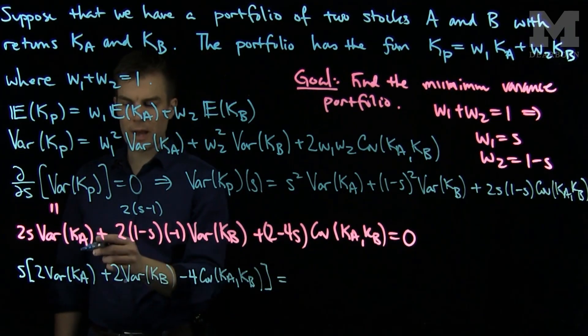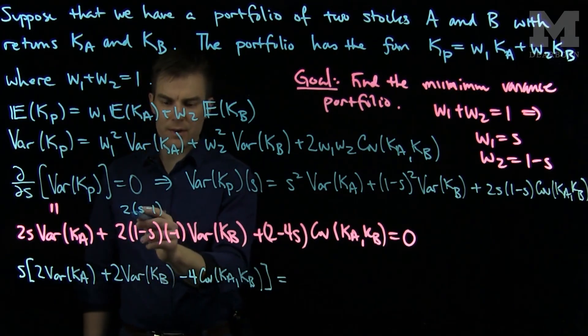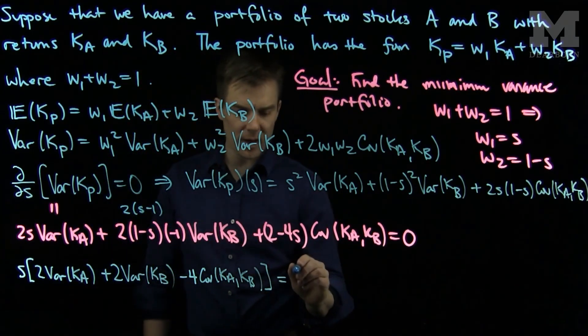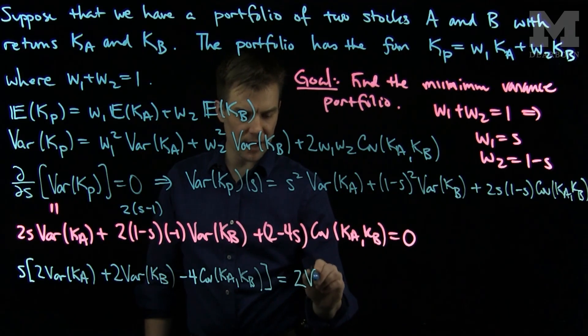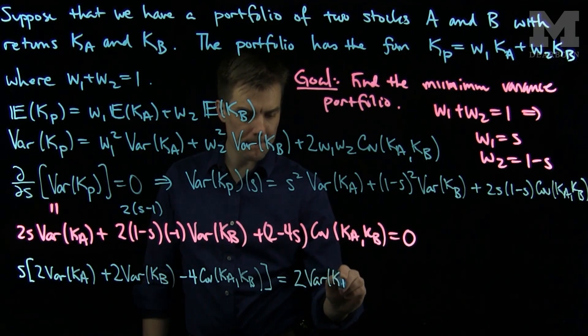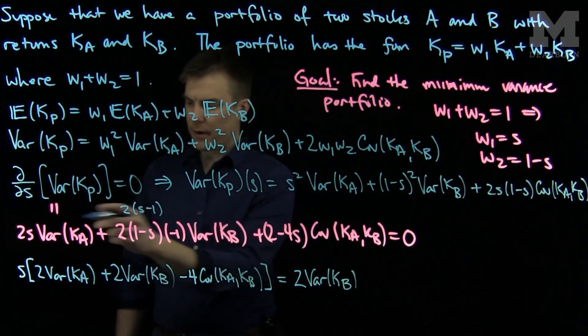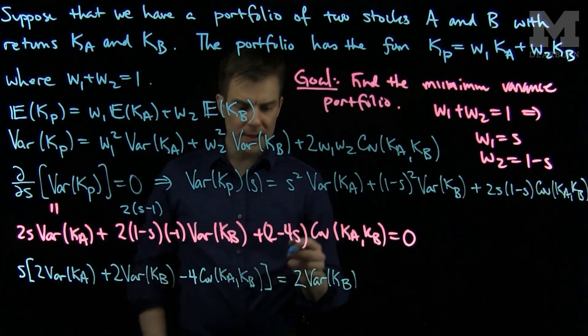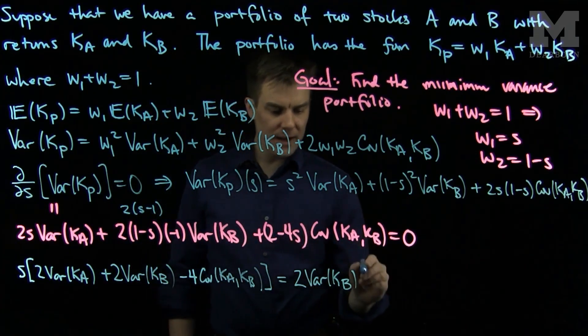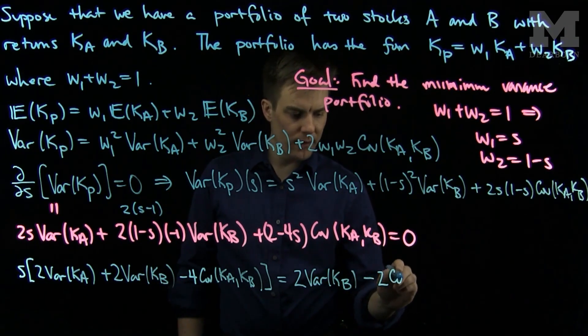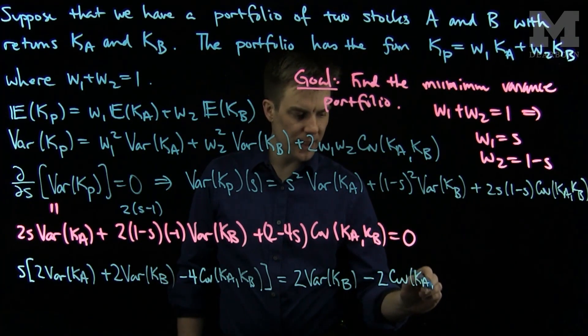And I will throw all the terms without S's on the other side. So I have a negative 2 variance of Kb, so I will have a 2 variance of Kb. I will have no variance of Ka, that's just a constant S term. And then I will have a negative 2 covariance of Ka and Kb.